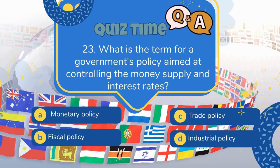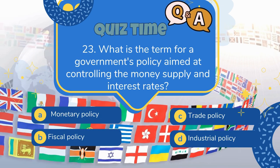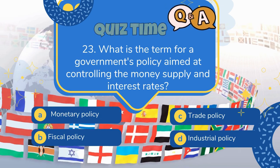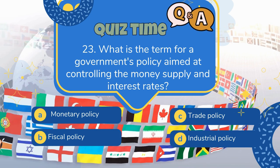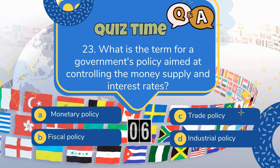23. What is the term for a government's policy aimed at controlling the money supply and interest rates?